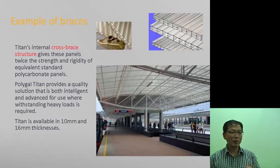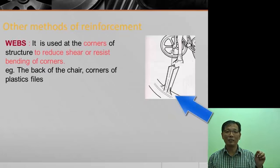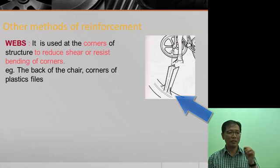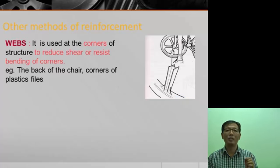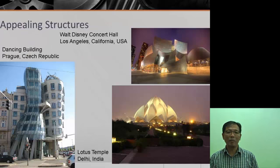Another type of reinforcement is webs — tiny strips of material placed at corners. If you look at classroom chairs, you can see the webs used within the chair structure.